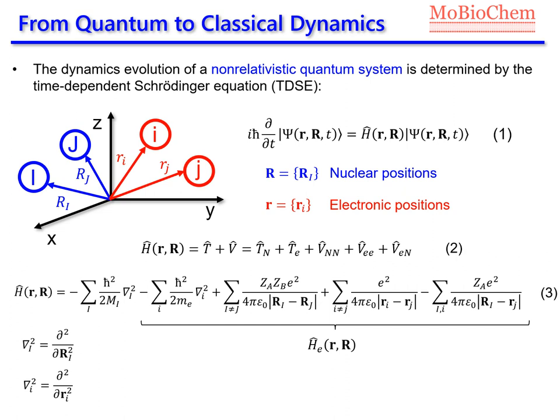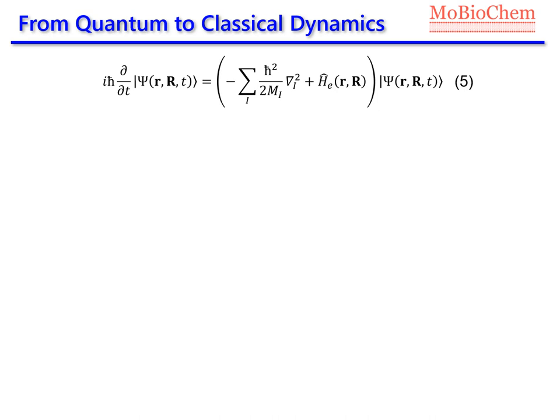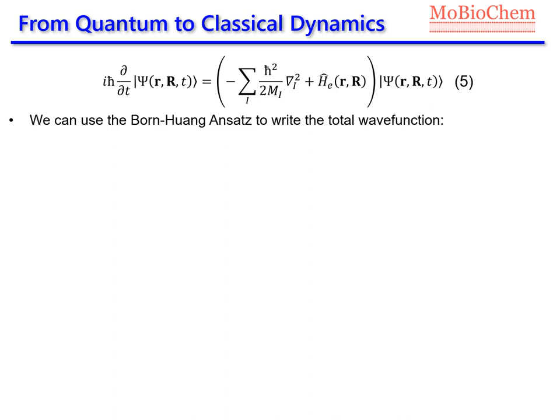We can take the last four terms of equation 3 — the kinetic energy for electrons and all the potential energy terms — and group them as a general Hamiltonian called the electronic Hamiltonian, which we represent as H_A. Then we write the total Hamiltonian as the kinetic energy of nuclei plus the electronic Hamiltonian. If we insert this into the time-dependent Schrödinger equation, writing the kinetic energy of nuclei plus the electronic Hamiltonian instead of the total Hamiltonian, we get equation number 5.